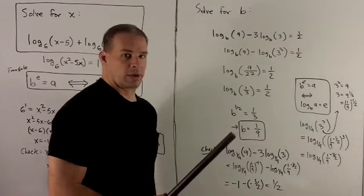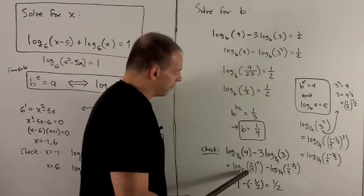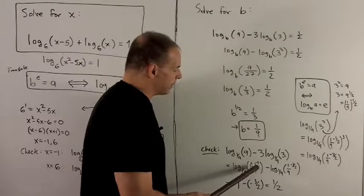Now I can use one of our rules for logarithm, which is that if I have a base, and then something on the inside base to a power, they're going to cancel and just leave me with the power.